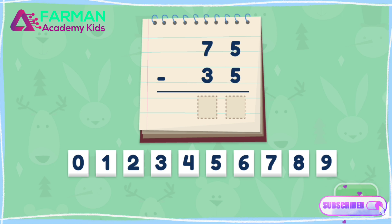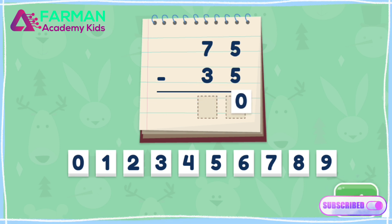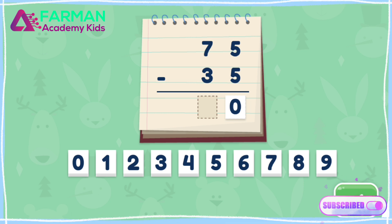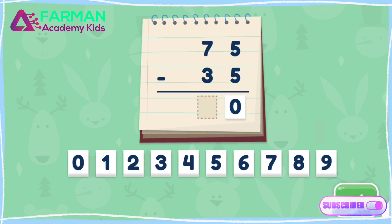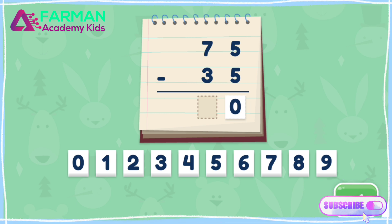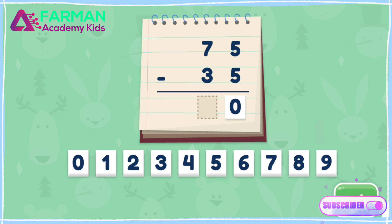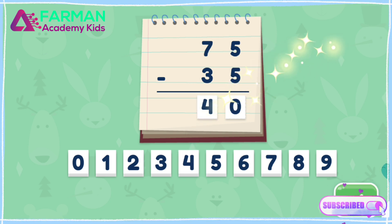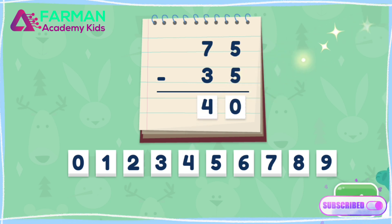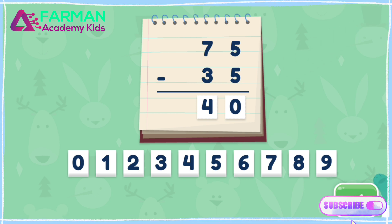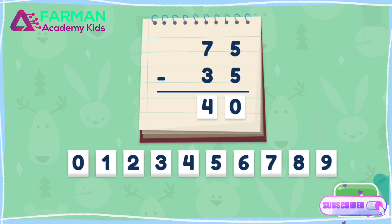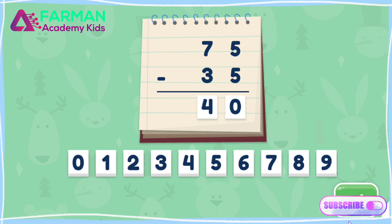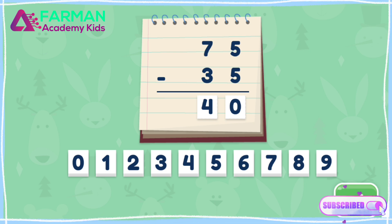Solve the equation. That's right! 75 minus 35 is 40. Jermaine's snowman was 40 centimeters tall.